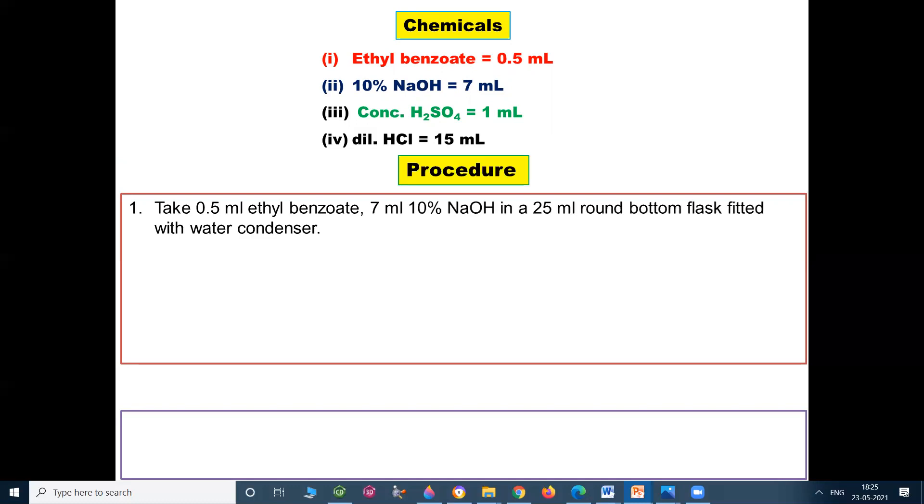Procedure of experiment. Take 0.5 ml ethyl benzoate and 7 ml 10% NaOH in a 25 ml round bottom flask fitted with water condenser. Boil the mixture for at least one hour. Disappearance of the ester layer confirms the completion of the reaction.